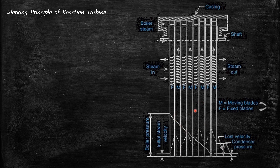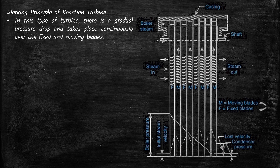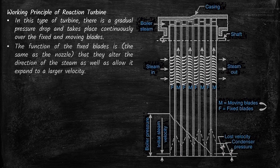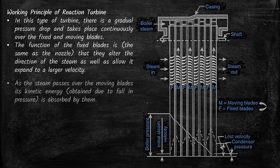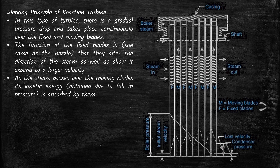The advantage of reaction turbines is that they can produce maximum work from the steam, and the efficiency of reaction turbines is considered higher than the impulse turbine, so they are used for heavy work output applications. There is a gradual pressure drop that takes place continuously over the fixed and moving blades. The fixed blade functions like a nozzle — it alters the direction of steam and allows it to expand to larger velocity. As steam passes over the moving blades, kinetic energy obtained due to the fall in pressure is absorbed by them.